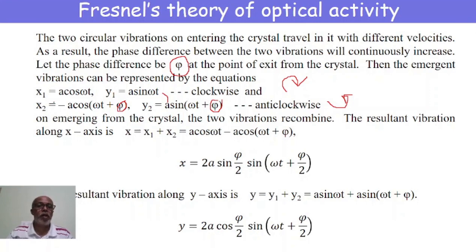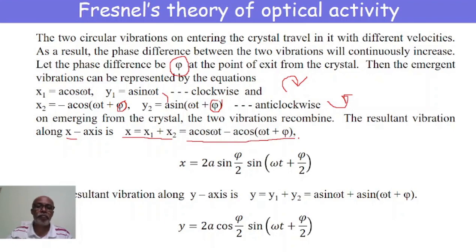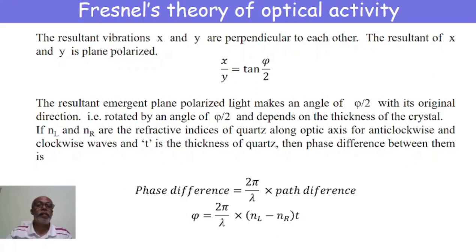On emerging from the crystal, the two vibrations recombine. The resultant vibration along the x-axis is x = x₁ + x₂ = a·cos(ωt) − a·cos(ωt + φ), which simplifies to x = 2a·sin(φ/2)·sin(ωt + φ/2). The resultant vibration along the y-axis is y = y₁ + y₂ = a·sin(ωt) + a·sin(ωt + φ), which simplifies to y = 2a·cos(φ/2)·sin(ωt + φ/2).